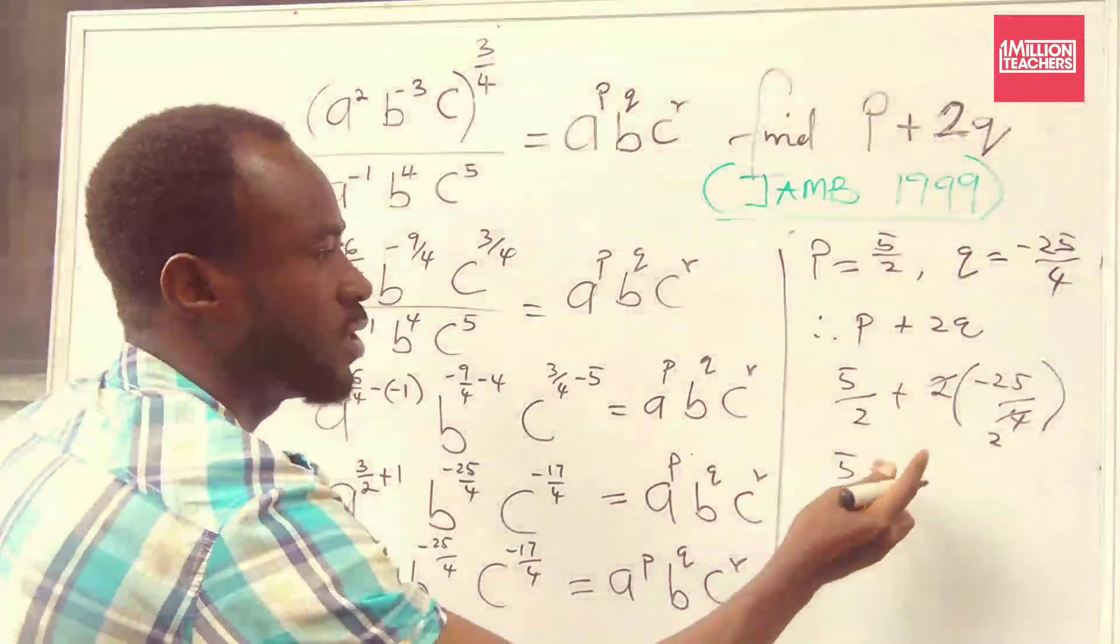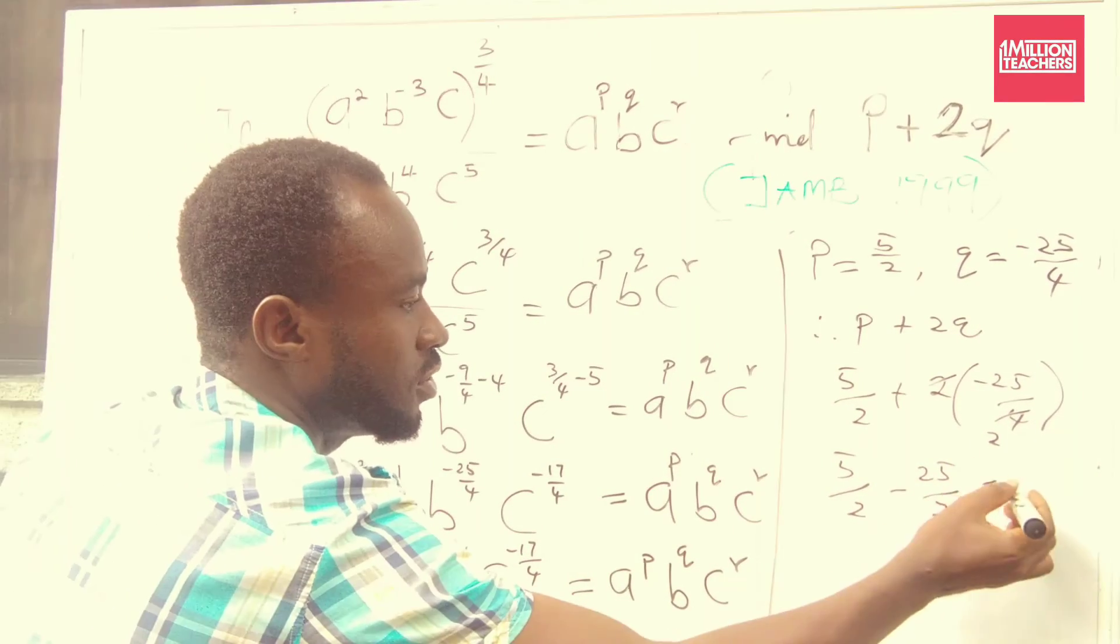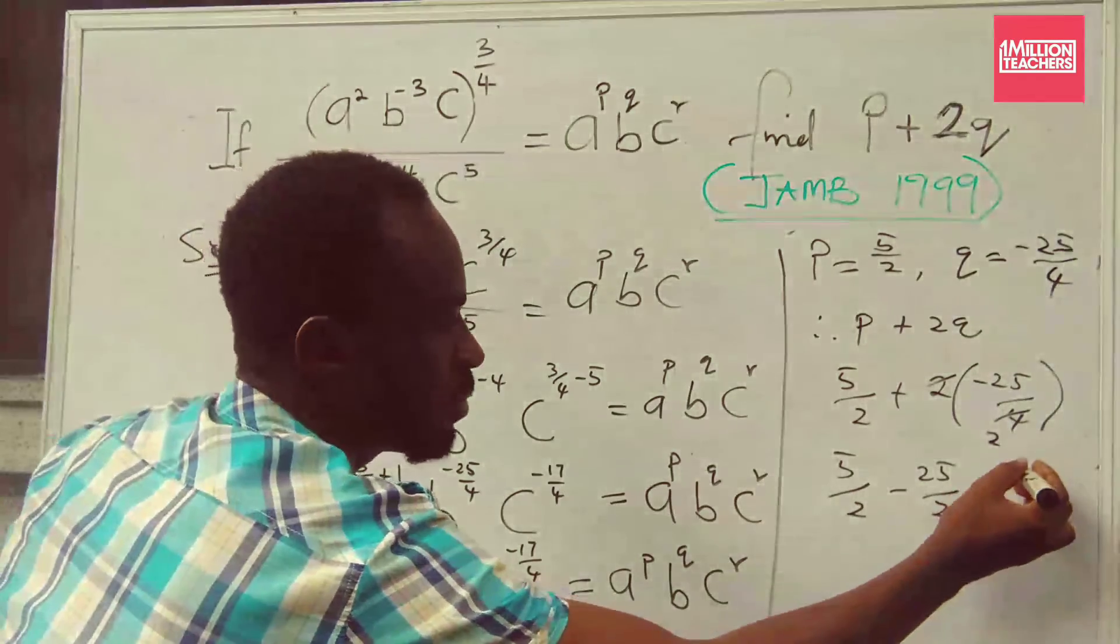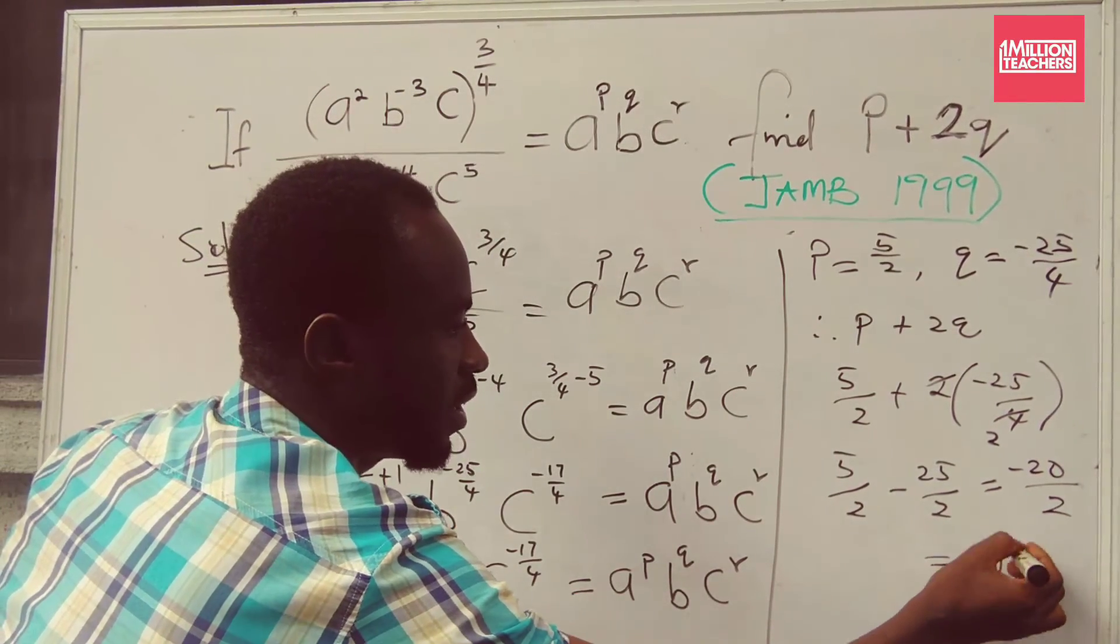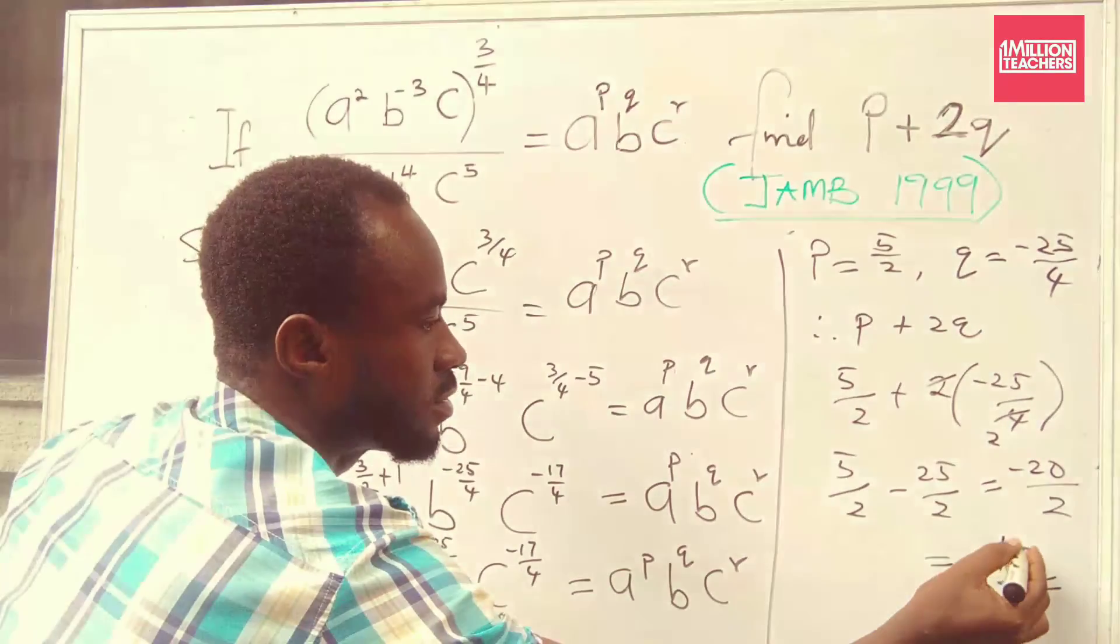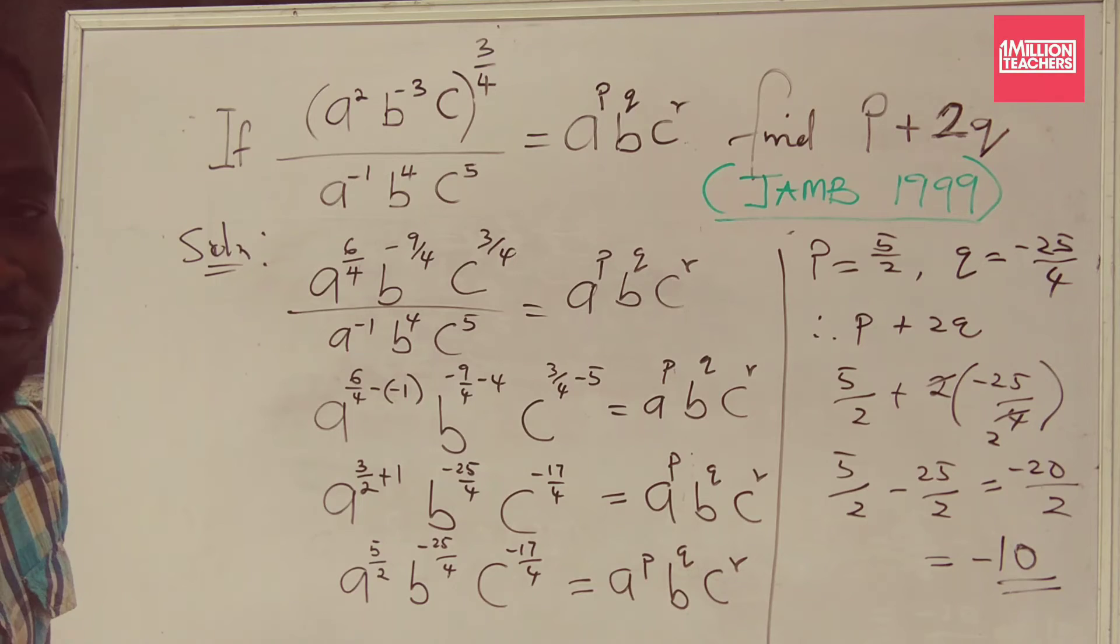And then plus times minus is minus 25 over 2. So this gives me this minus this is minus 20 over 2. So that my final answer is minus 20 divided by 2, and that is minus 10.